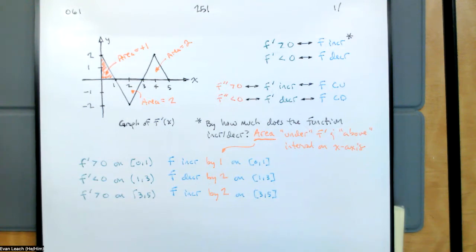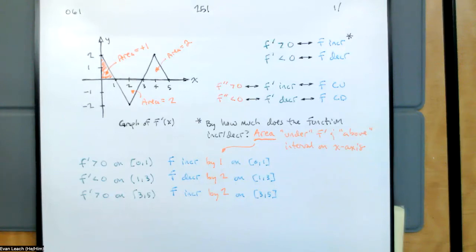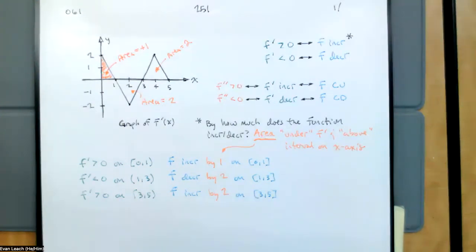From 1 to 3, the area is two and it's below the x-axis, so the function will decrease by two — because that's the area. The reason I have 'under' and 'above' in quotes is that when the derivative is positive, the function is above the x-axis, but when the derivative is negative, the function is below the x-axis. It's kind of under the x-axis and above the function. So that's just multiplied by negative one.